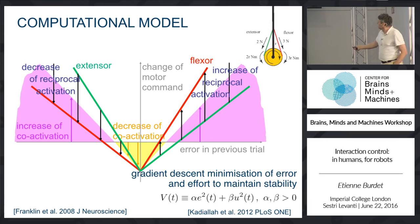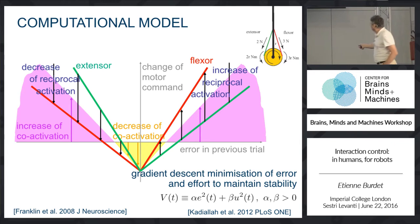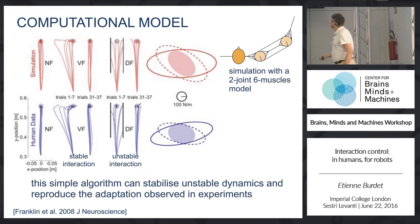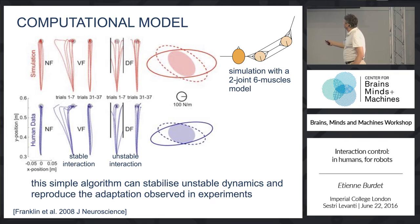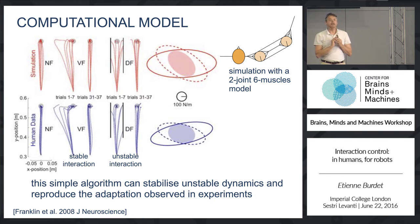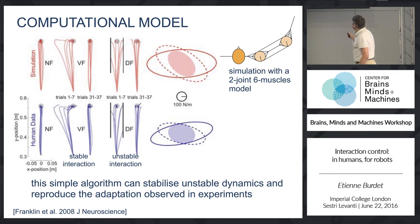This can be analyzed using passivity theory or Lyapunov theory. You have a function of the error and the effort, and you minimize error and effort at the same time with this V-shaped function. In simulation, if you have a force field deviating in one direction, trial after trial you come closer to straight-line movements. If you have an unstable interaction, it diverges at first, but slowly you recover the free movement behavior. You get a good prediction of the stiffness ellipse in all conditions.